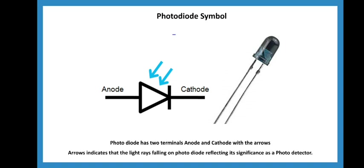In photodiode connections, it is a reversal connection — anode is connected to negative and cathode is connected to positive.